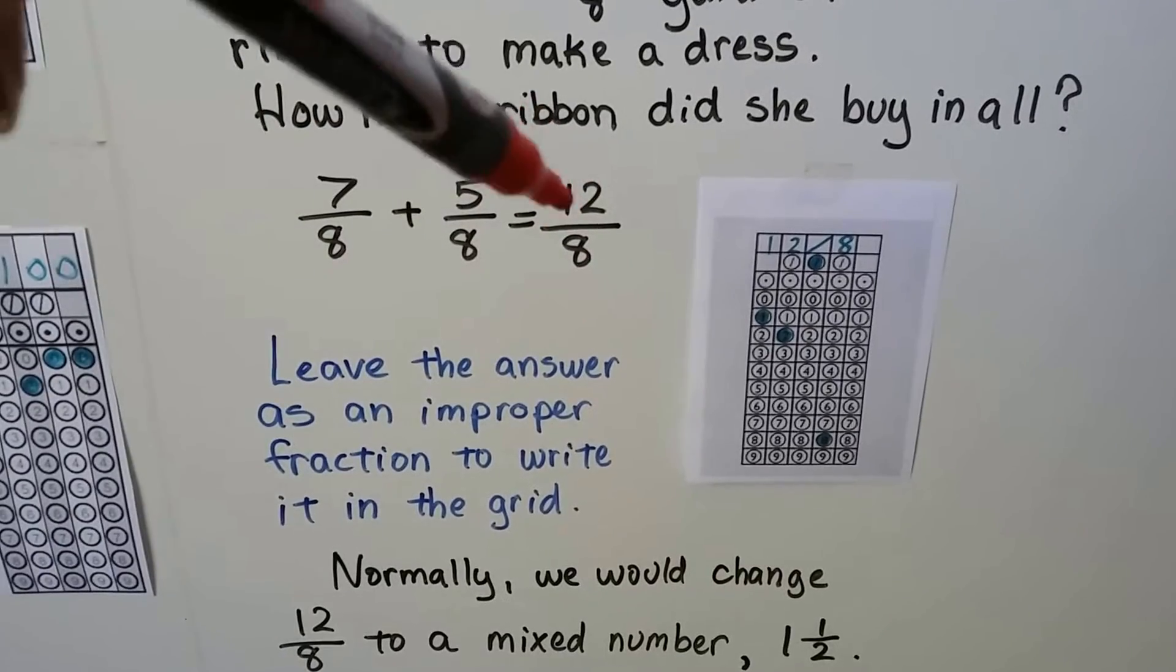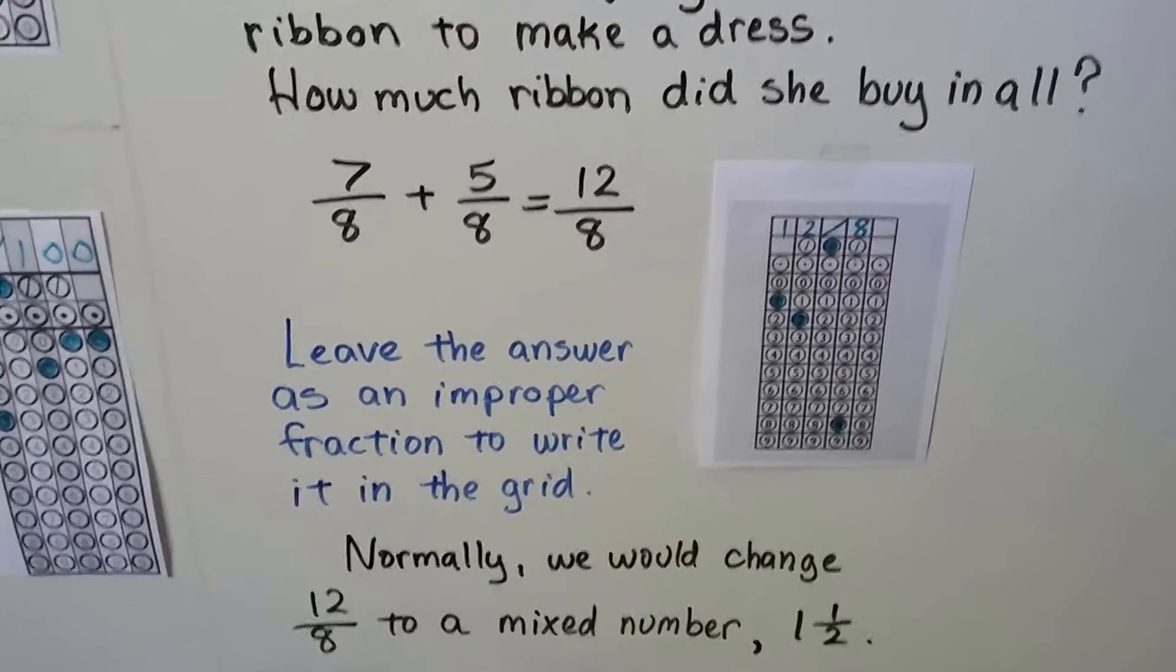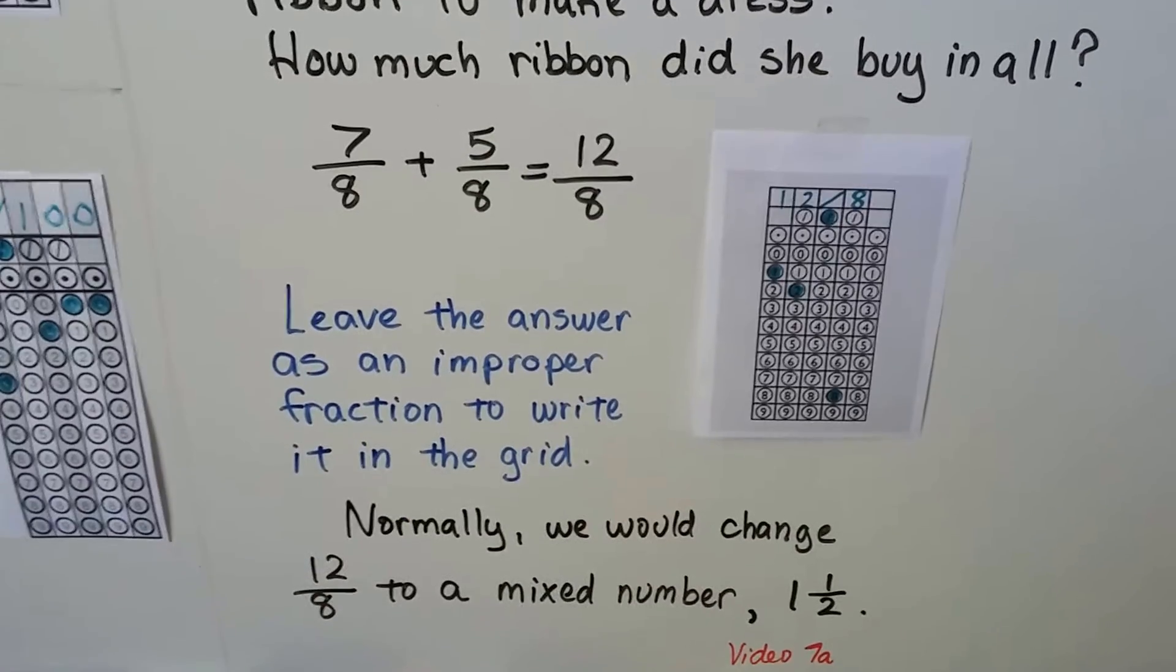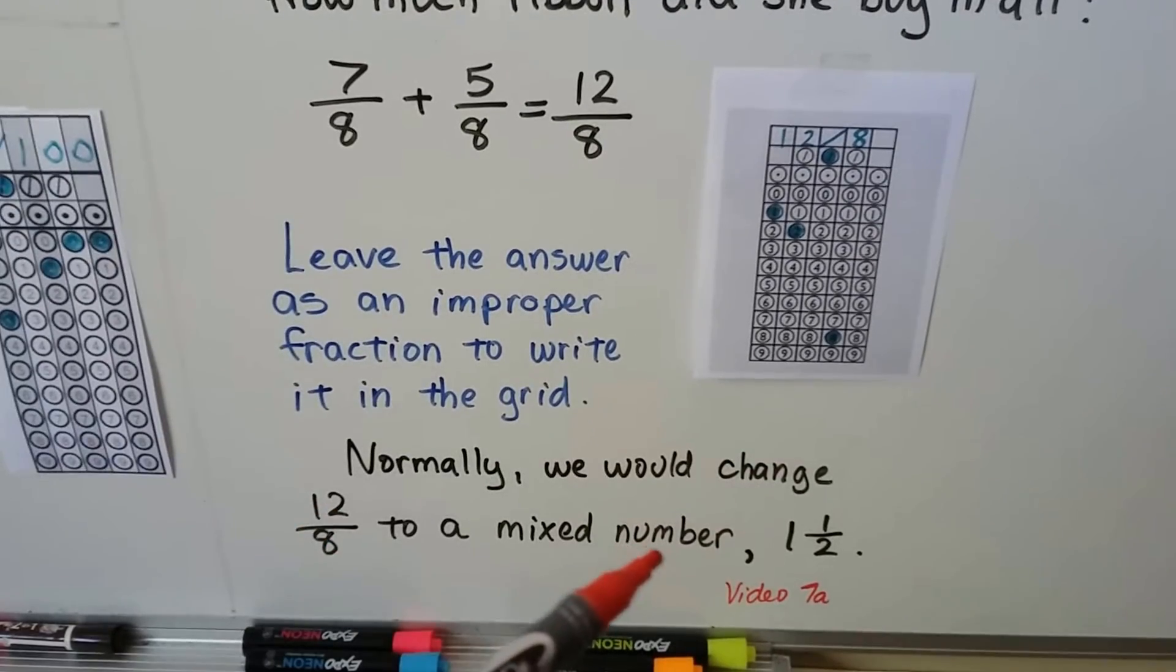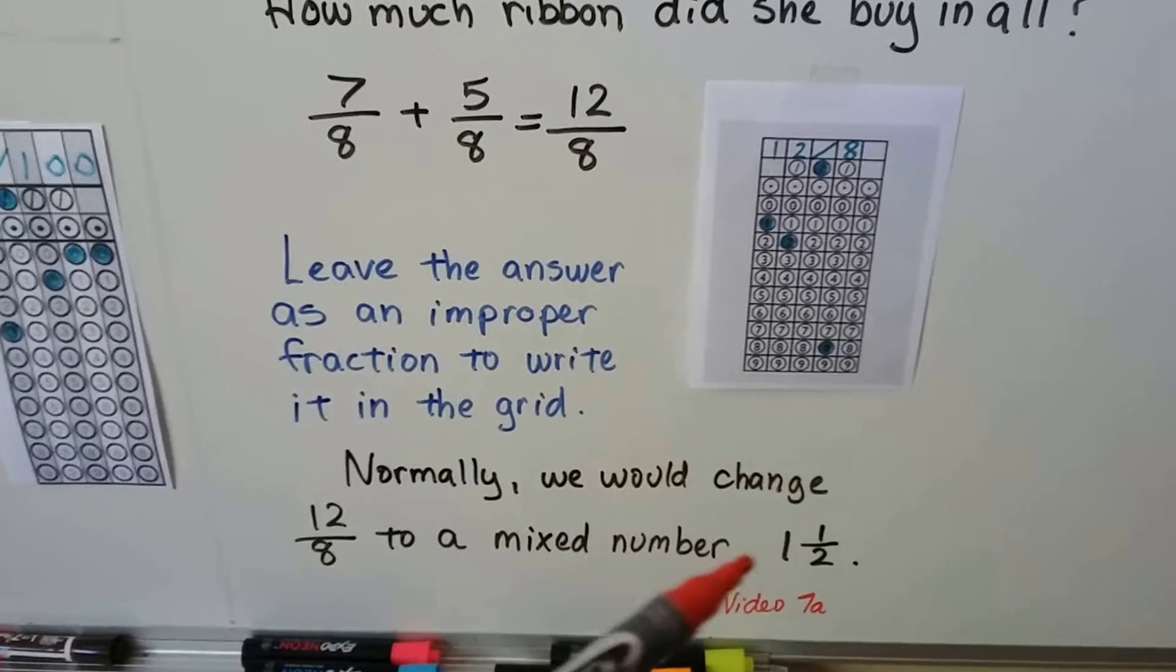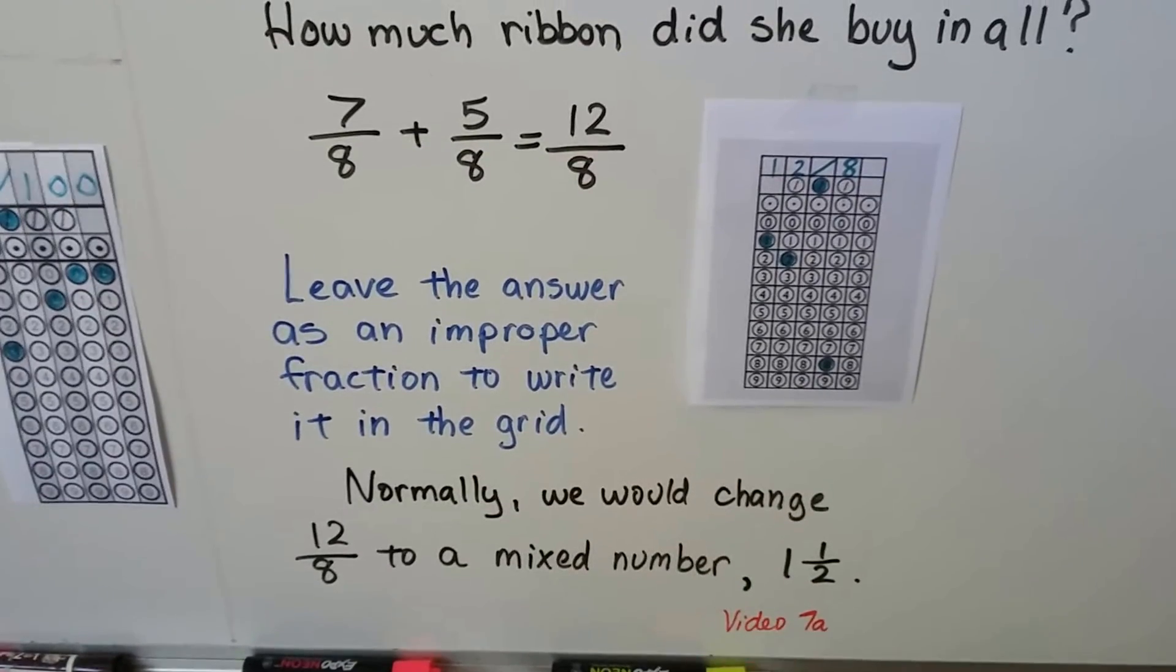And we leave the answer as an improper fraction, where this numerator is bigger than the denominator, because we can't write a mixed number in this answer grid. Normally, we would change the 12-eighths to a mixed number. It actually reduces to one and a half. It goes to one and four-eighths, which reduces then to one and a half. We're going to do that in the next video.